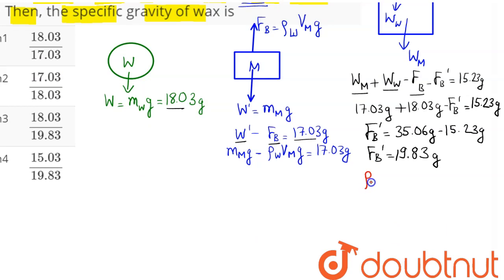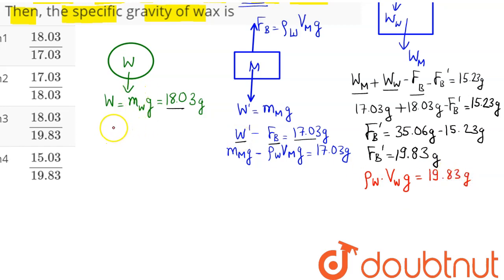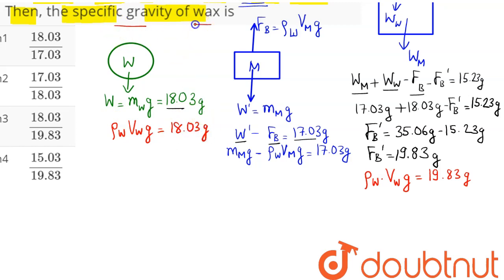The buoyant force on wax equals density of water × volume of wax × g = 19.83g. Also, weight of wax equals density of wax × volume of wax × g = 18.03g.